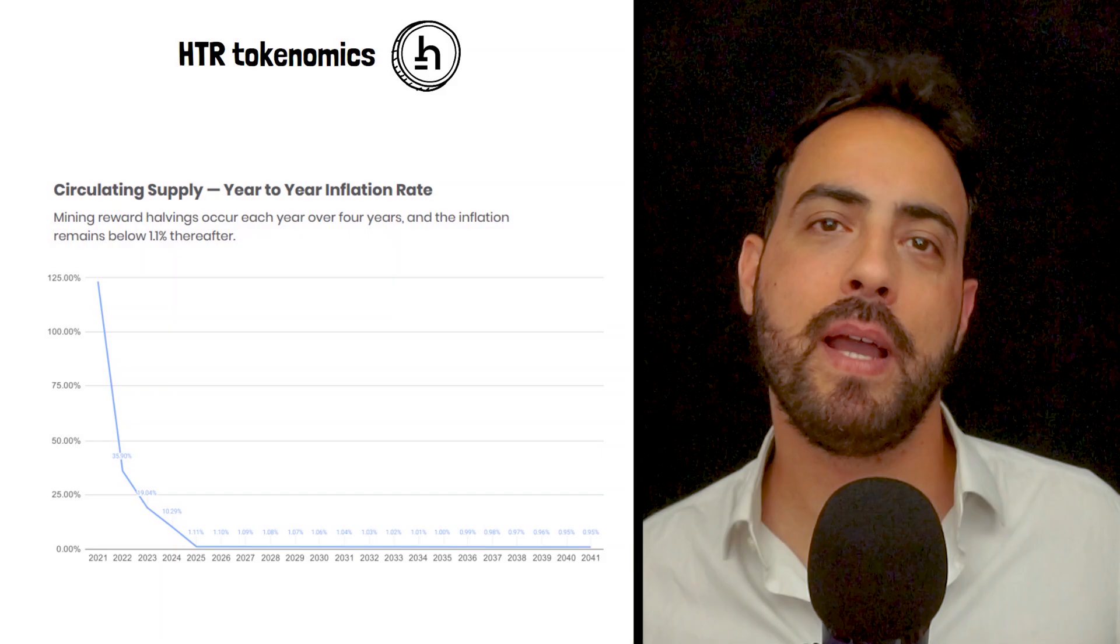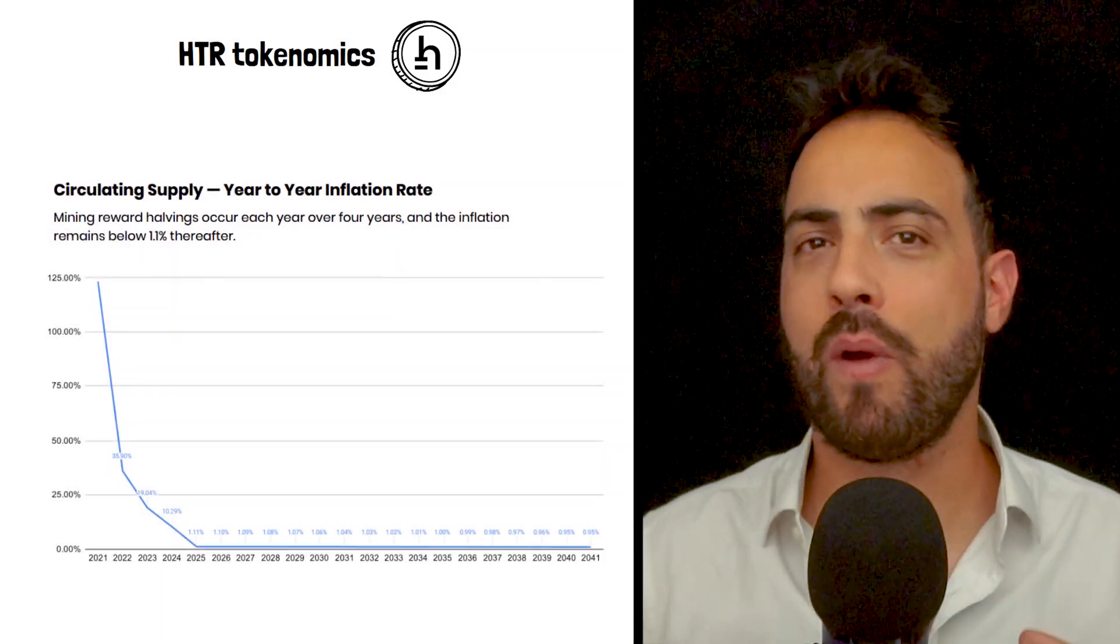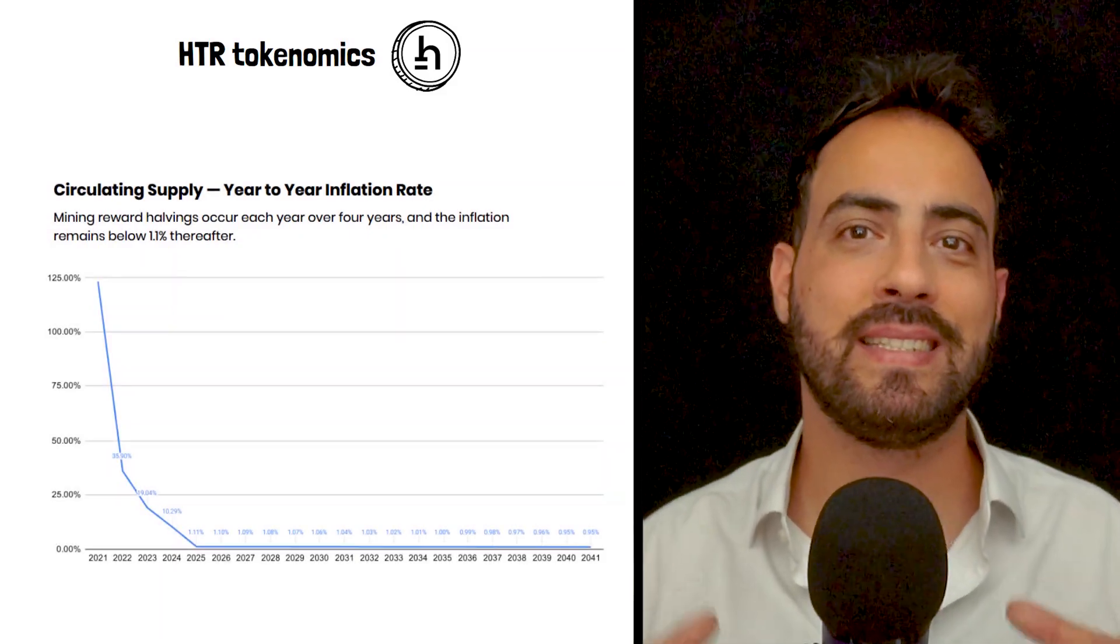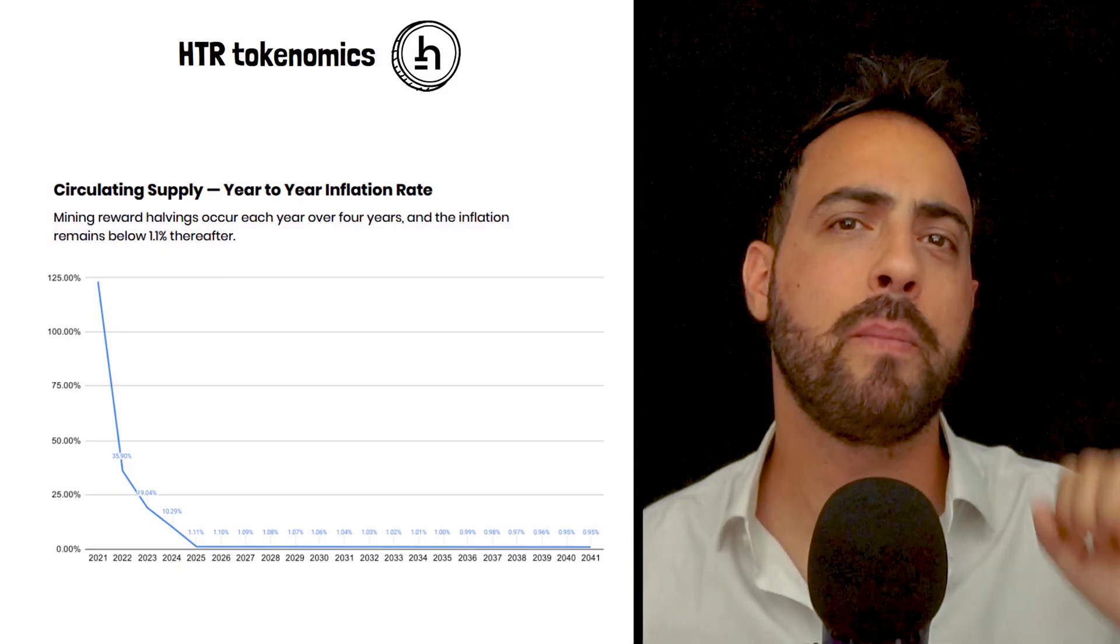New HTR tokens are created through mining, similar to Bitcoin. However, the reward schedule is designed to be more gradual with block rewards halving periodically.